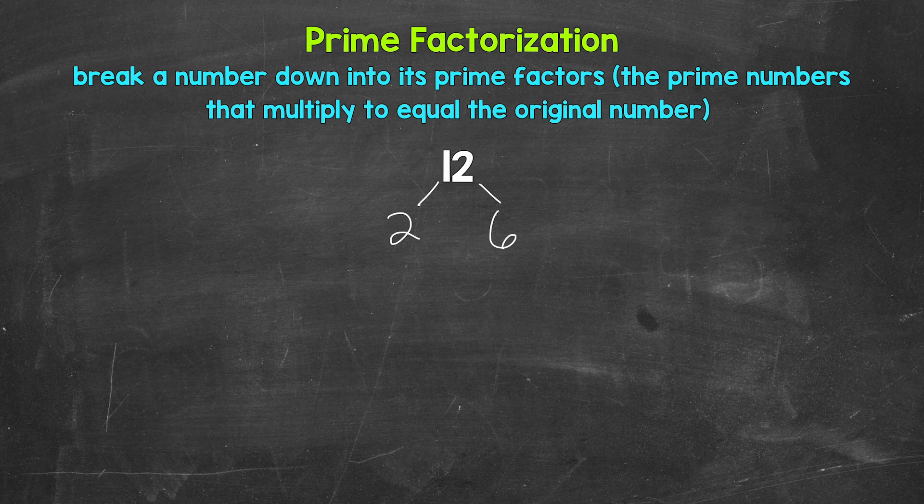Now keep in mind, we could have also started with the factors of 3 and 4. And those factors would work as well. Depending on the number, there can be multiple different factors that we can use. So there can be multiple different ways we can do these. But in the end, we will get to the same prime numbers. And that's what's important.